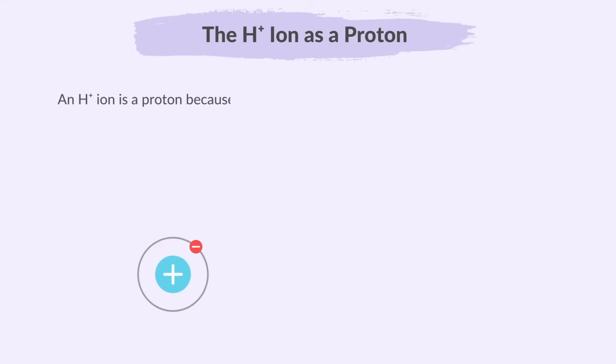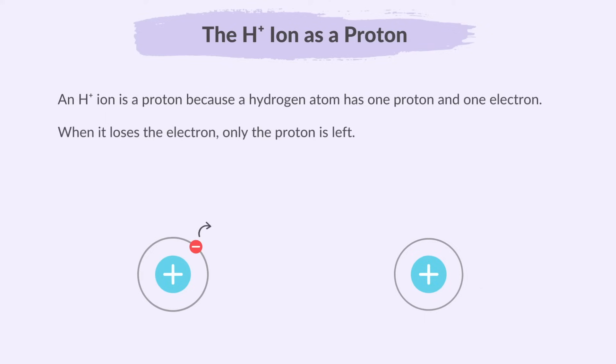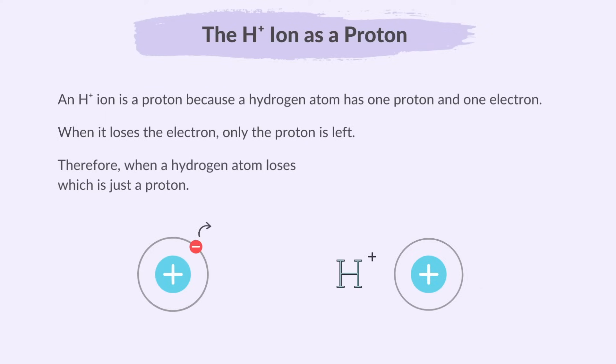An H⁺ ion is a proton because a hydrogen atom has one proton and one electron. When it loses the electron, only the proton is left. Therefore, when a hydrogen atom loses its one electron, it becomes an H⁺ ion, which is just a proton.